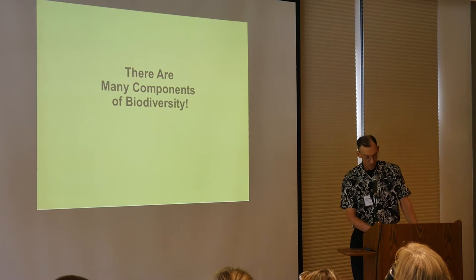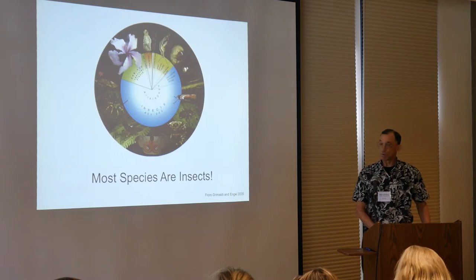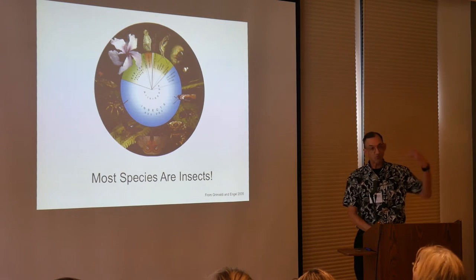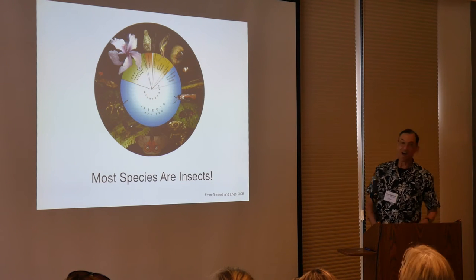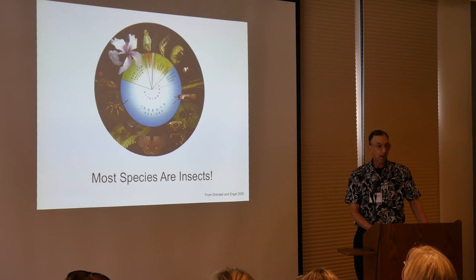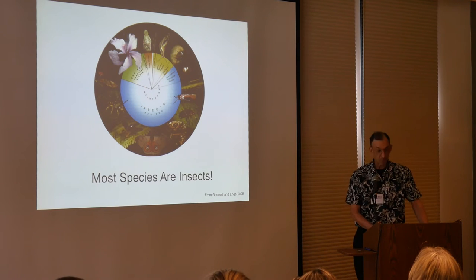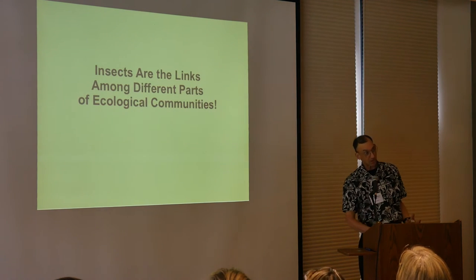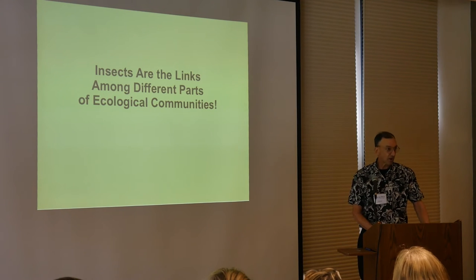Let's take biodiversity first. There are many components of biodiversity, and if we're thinking about all the species on planet Earth, we can see that there are plants, there are animals, there are fungi, there are bacteria, there are viruses, there's algae. And the animals — the vast majority of the animals — are insects. So we really do have to think a little bit more about the insects.